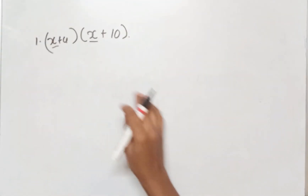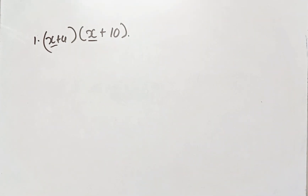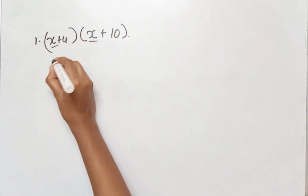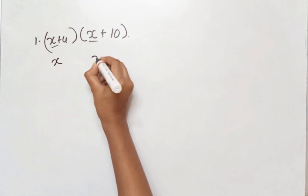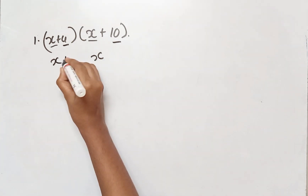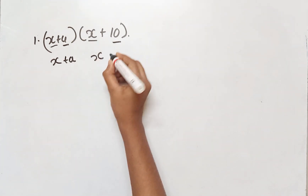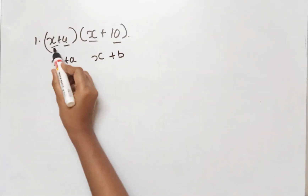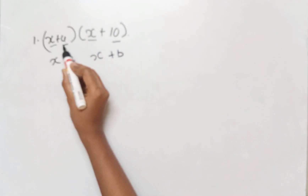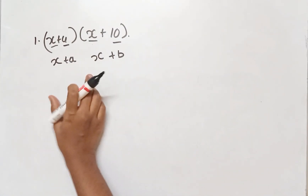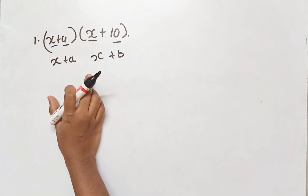The first question is (x + 4) into (x + 10). X and X are common. So what is the identity? We need to identify the correct identity form.